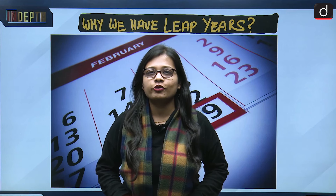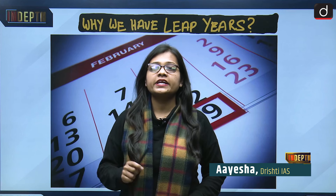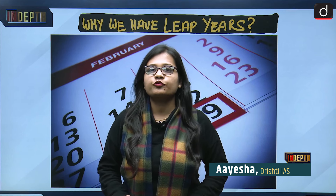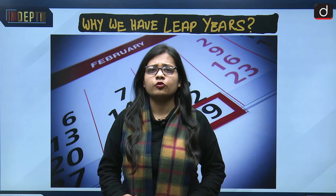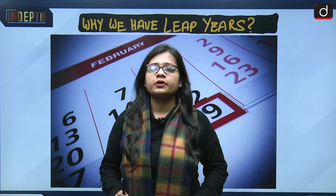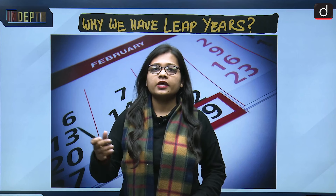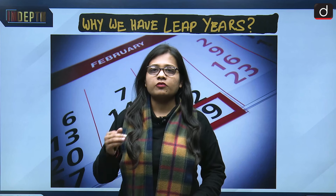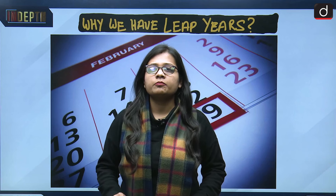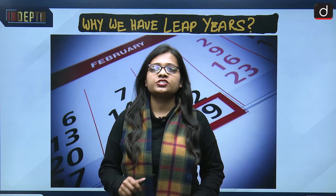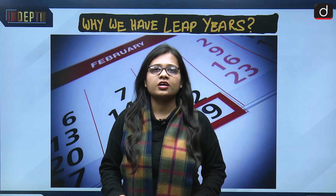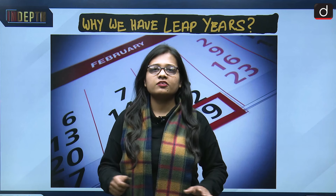The month of February in 2024 has 29 days, while usually February consists of 28 days. This also happened in 2020 and 2016. After a gap of four years, we call it a leap year — when the month of February has one extra day, that is 29 days.